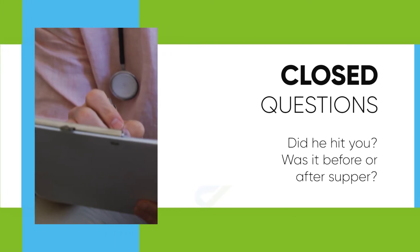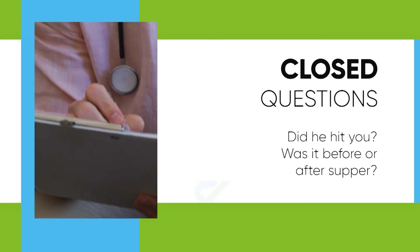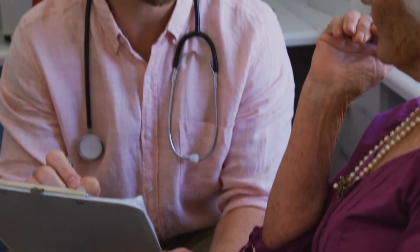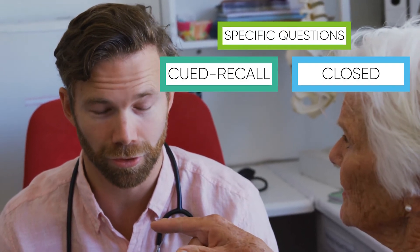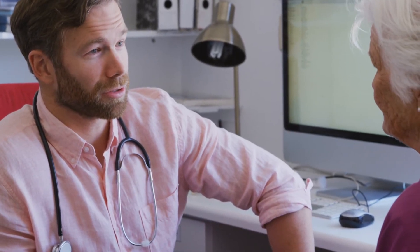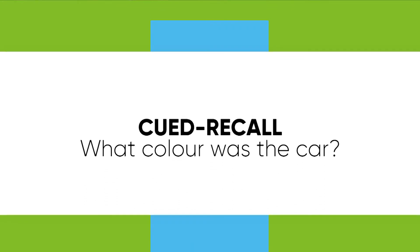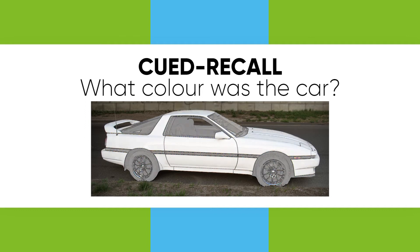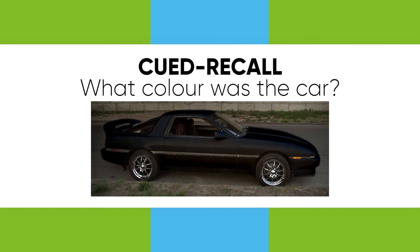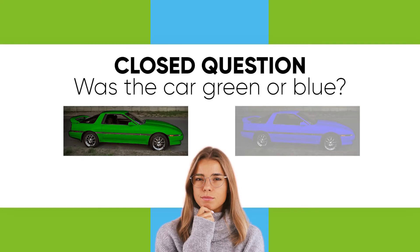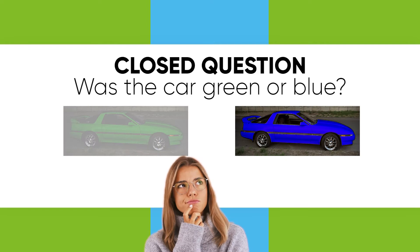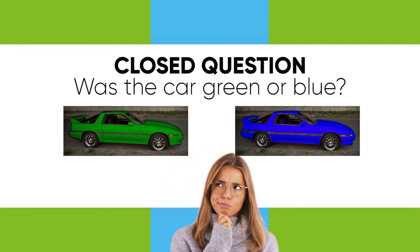Closed questions, such as 'did he hit you?' or 'was it before or after supper?', rely more heavily on recognition memory and elicit the narrowest responses. Misunderstandings or communication errors may not be obvious from the response. Cued recall and closed questions are specific questions because they tell people what specific information is expected. Specific questions are also less likely to make people feel heard and valued compared to open-ended questions. The danger of specific questions lies in their specificity — because the questions contain details, sometimes details a person didn't encode or doesn't remember, they can lead to guessing without a careful memory search. Closed questions are even more likely to lead to thoughtless guessing than cued recall questions because the answers are contained within the questions themselves.